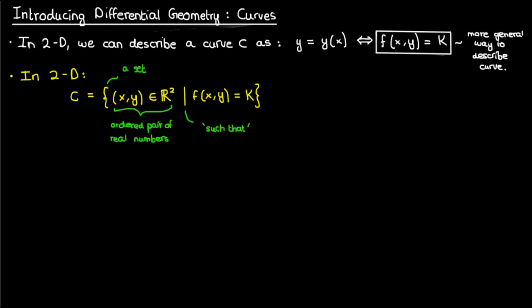This should cover curves in two dimensions but what about curves in three dimensions? Well curves in three dimensions are defined a bit differently. Instead of using an ordered pair we use an ordered triple obviously because we're working in three dimensions. Now this ordered triple has to satisfy f1 of x y and z equals k1 and f2 of x y and z equals k2. Now you might ask why does it have to satisfy two equations this f1 equation and this f2 equation?